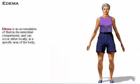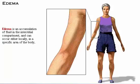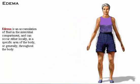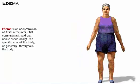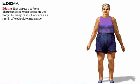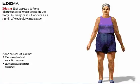Edema is an accumulation of fluid in the interstitial compartment and can occur either locally in a specific area of the body, or generally throughout the body. Although edema first appears to be a disturbance of water levels in the body, in many cases it occurs as a result of electrolyte imbalance. A lack of plasma protein commonly causes edema. Let's look at four causes of edema: decreased colloid osmotic pressure, increased hydrostatic pressure, increased capillary permeability, and lymphatic obstruction.